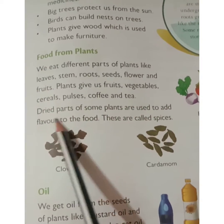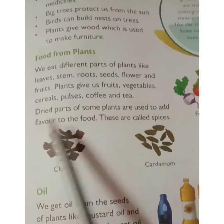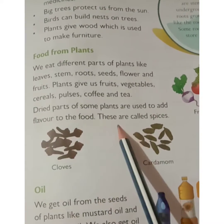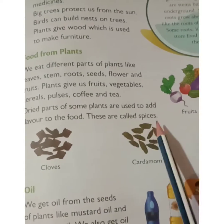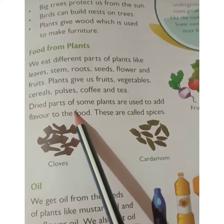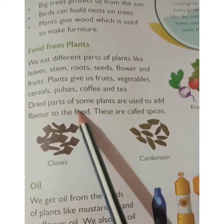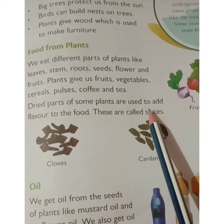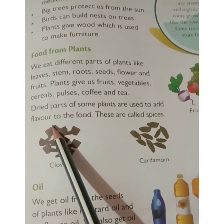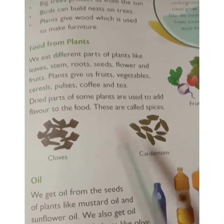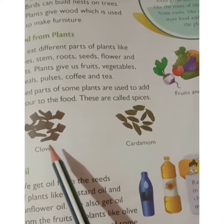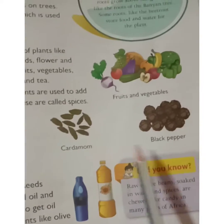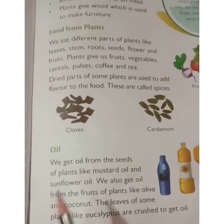Dried parts of some plants are used to add flavor to food. These are called spices. For example, cloves, cardamom, black pepper, and so on.